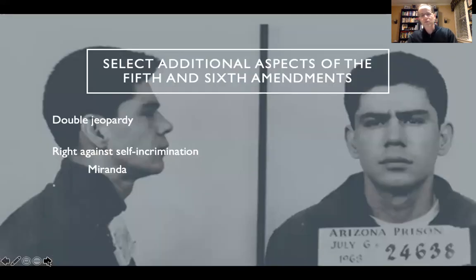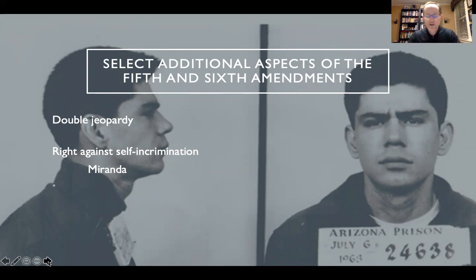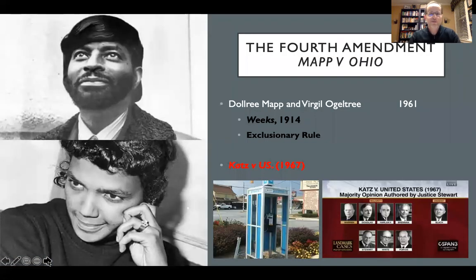Moving to the Fifth Amendment: you cannot be charged twice for the same crime if you have been acquitted — not a hung jury, but acquitted. Remember, the same action can apply to two different crimes. A murder involving drug trafficking or terroristic threats can also be considered a federal crime, so if you're tried in the state and acquitted, the federal government can still prosecute you. The Miranda warnings enable you to refuse to speak and to have your attorney present.